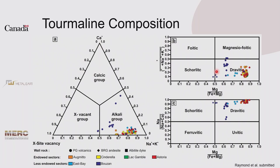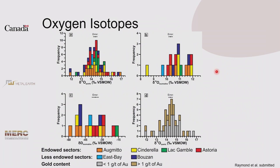Looking at the oxygen and hydrogen isotope compositions, the range in isotope composition in the mineralized and less mineralized areas of the Ogmito-Bouzain segment are non-distinguishable by oxygen isotope composition alone. The same applies to oxygen isotopes in tourmaline and δD values in tourmaline, which show no zonation. All oxygen isotope values coded by above or below one gram gold per ton also show no systematic difference.